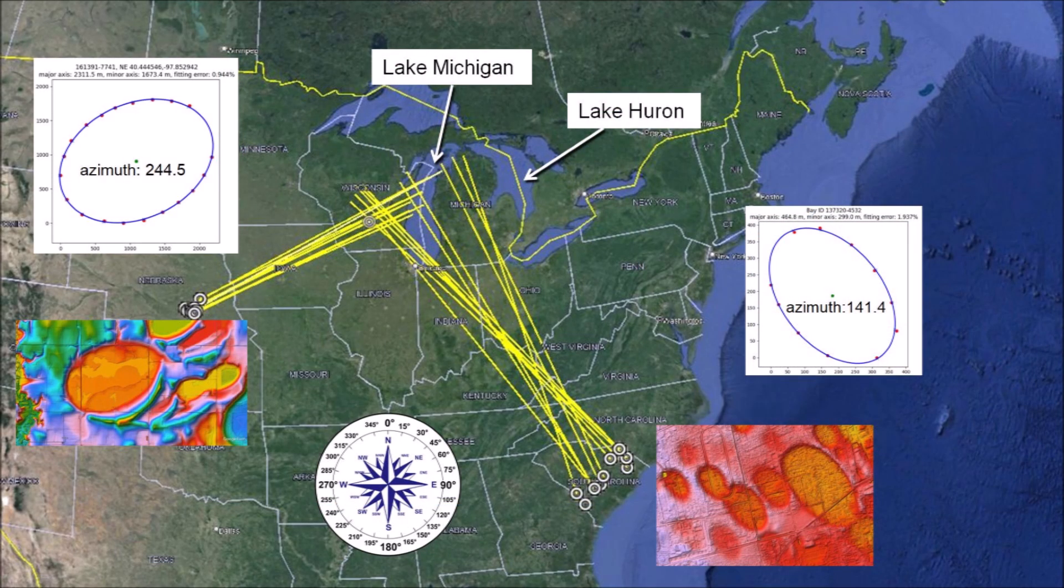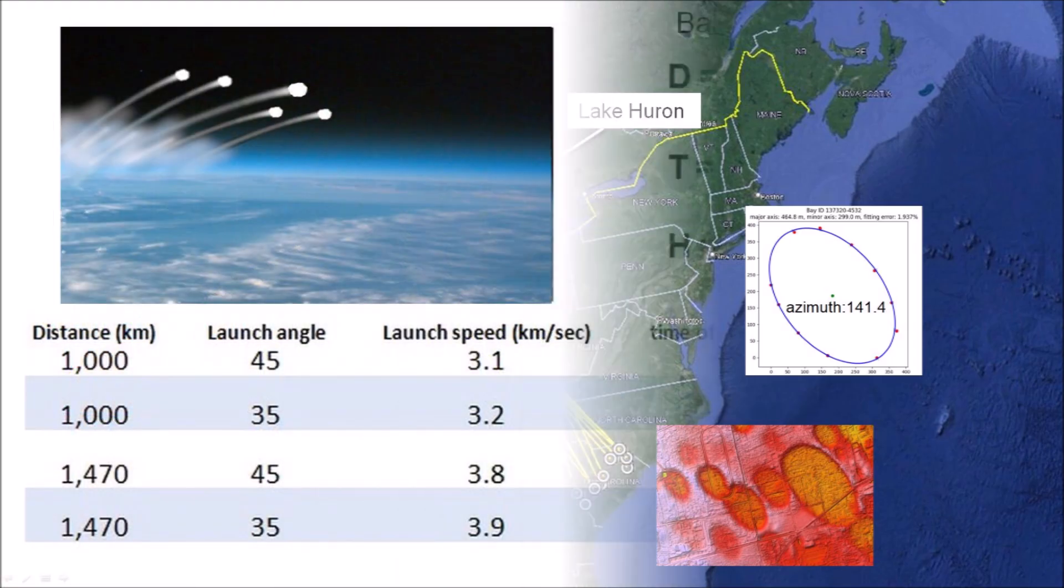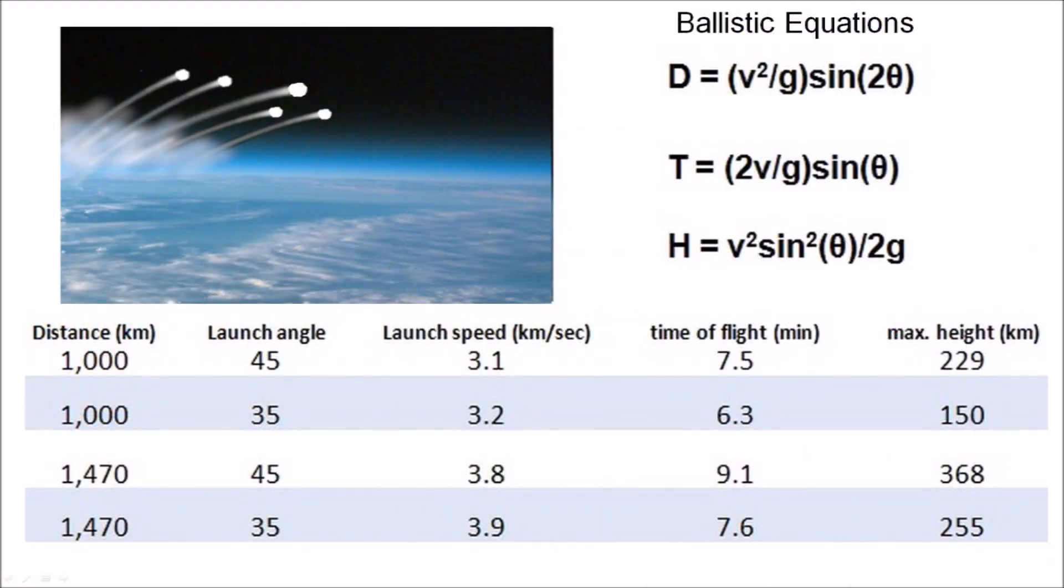The azimuths calculated from fitting ellipses to the Carolina Bays and Nebraska basins provide an objective method of determining the orientation of the basins. Using the distance of a Carolina Bay from the convergence point and the launch angle, it is possible to use ballistic equations to get estimates of the launch velocity of the ice projectiles. We can get useful values even if the exact launch point is not known. Using ballistic equations for distances from 1000 to 1470 km and launch angles from 35 to 45 degrees, we calculate that the launch speeds range from about 3 to 4 km per second.